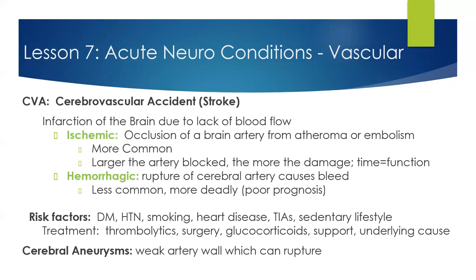The CVA — cerebral vascular accident, also known as a stroke — is an infarct to the brain caused by a lack of blood flow. The degree of collateral circulation determines the extent of the cerebral damage. There are two types of stroke: ischemic is more common and caused by a blood clot, whereas hemorrhagic is less common but more deadly, usually with a very poor prognosis. Risk factors include hypertension, smoking, coronary artery disease, diabetes, and sedentary lifestyle. Signs and symptoms depend on the location of the obstruction, the size of the artery, and the area affected.